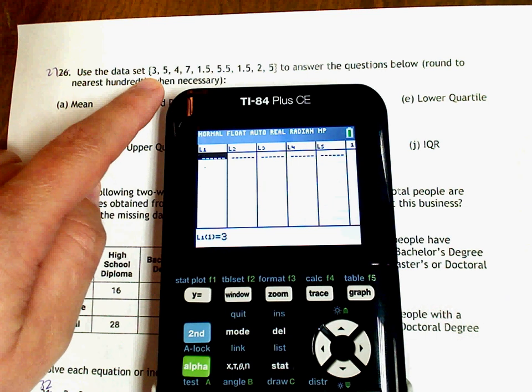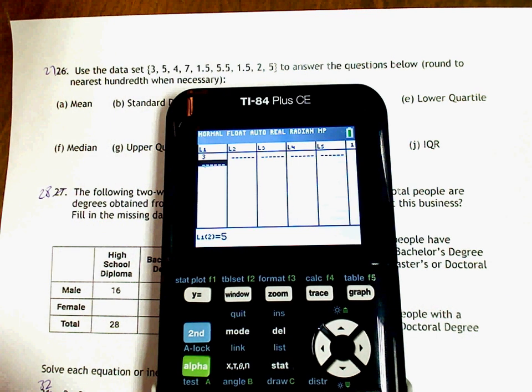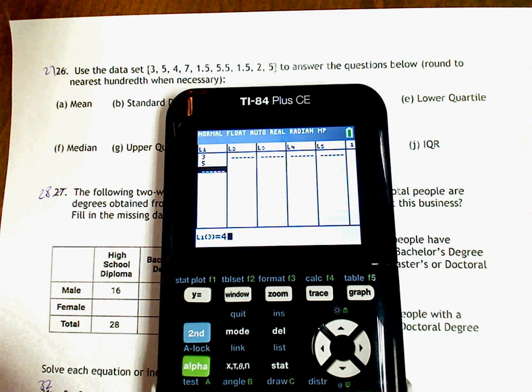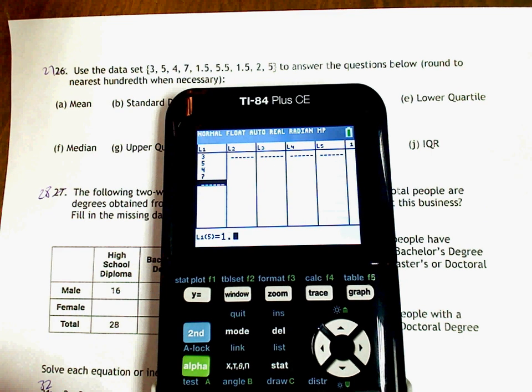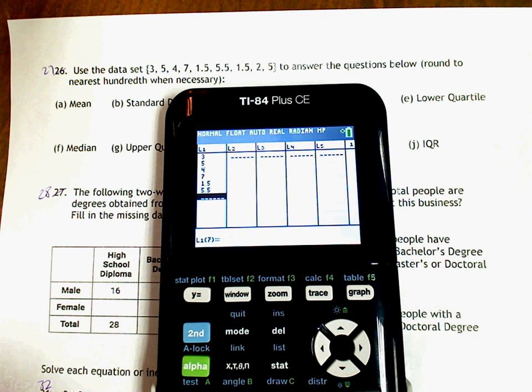So 3 ENTER, 5 ENTER, 4 ENTER, 7 ENTER, 1.5 ENTER, 5.5 ENTER, 1.5 again, and then 2, and then 5.